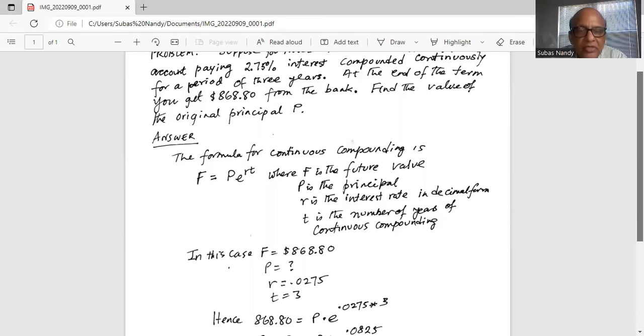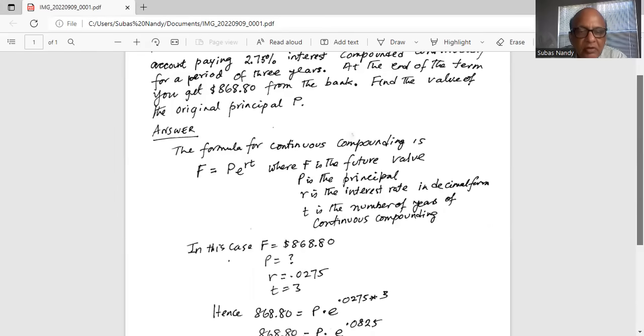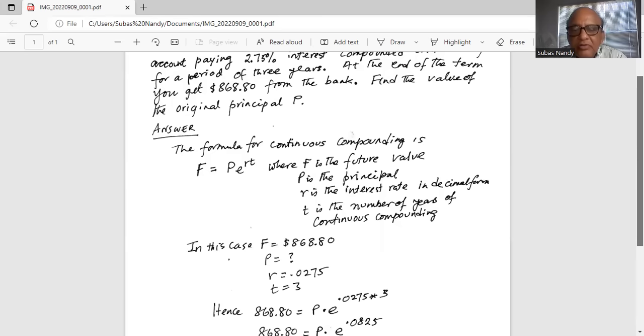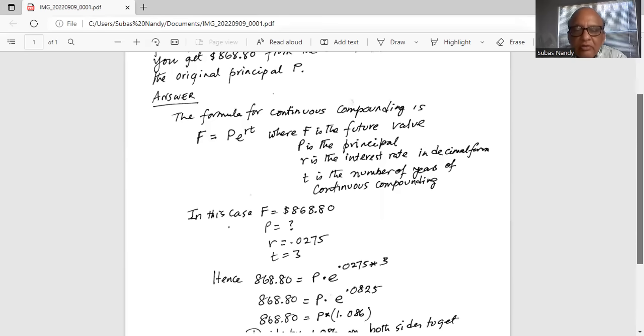F equals $868.80, P is not known, R is 0.0275 (2.7% in decimal form is 0.0275), and T equals 3.